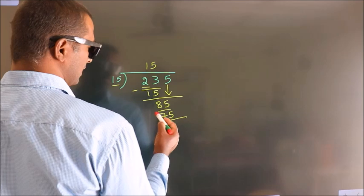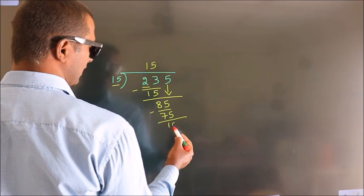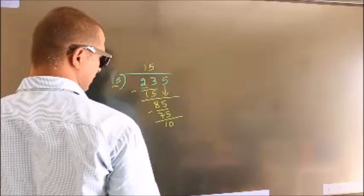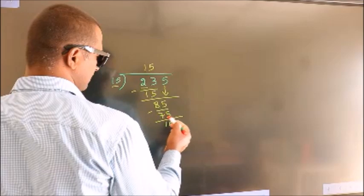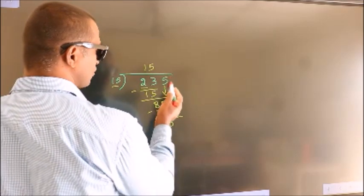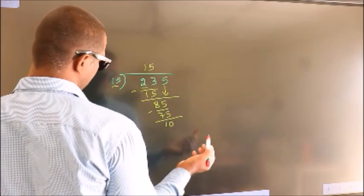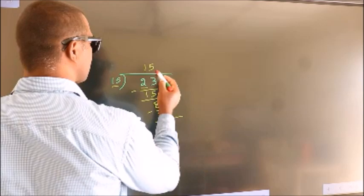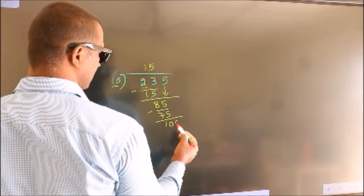Now we subtract. We get 10. After this, no more numbers to bring it down. So what we do is, we put dot take 0.